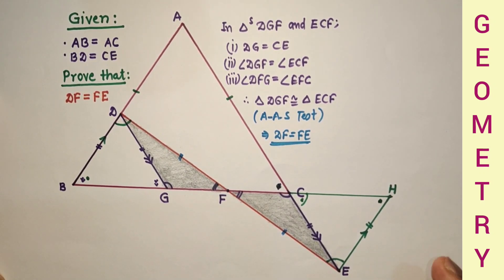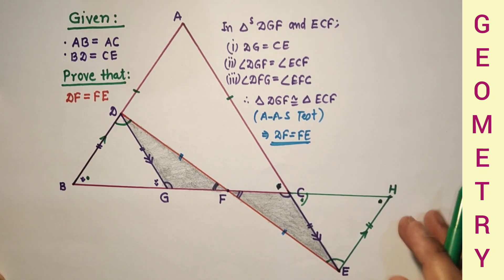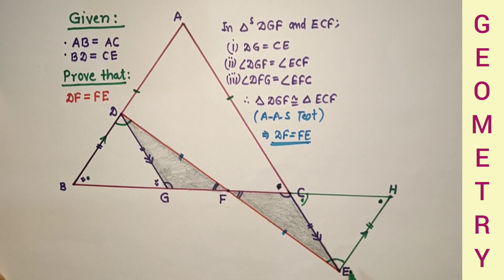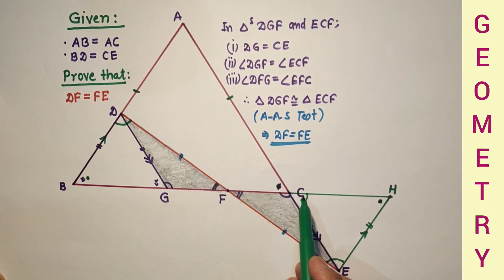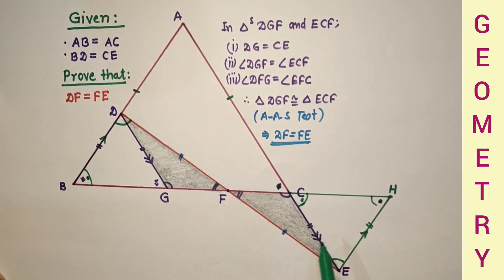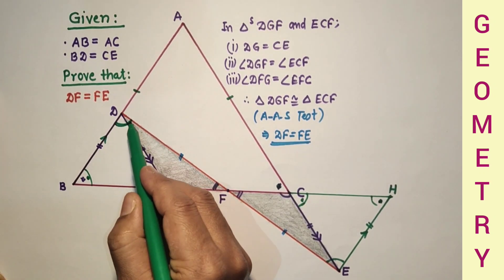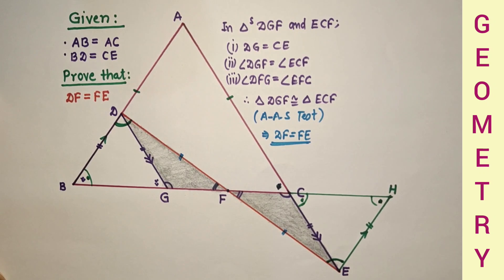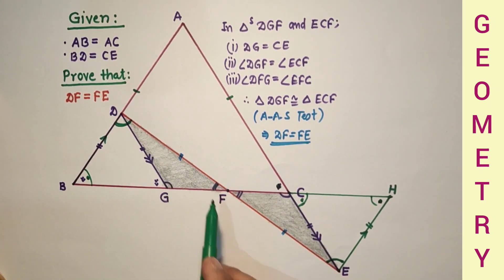On the other hand, if we choose the construction where EH equals EC instead of parallel, then in the two triangles this side equals this side. Since CE equals BD is given, these two are equal. This means this angle is equal to this angle, and therefore the lines are parallel. If parallel, then this angle equals this angle. Once again by angle-side-angle, triangles DBF and EHF are congruent, and corresponding sides DF and FE are equal. Hence proved.